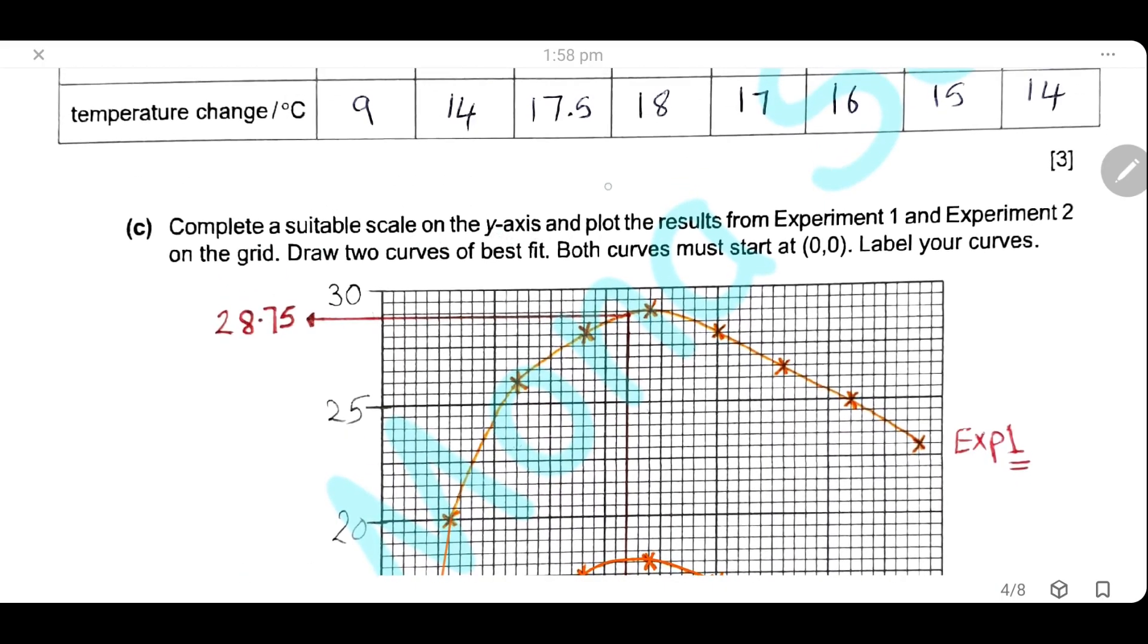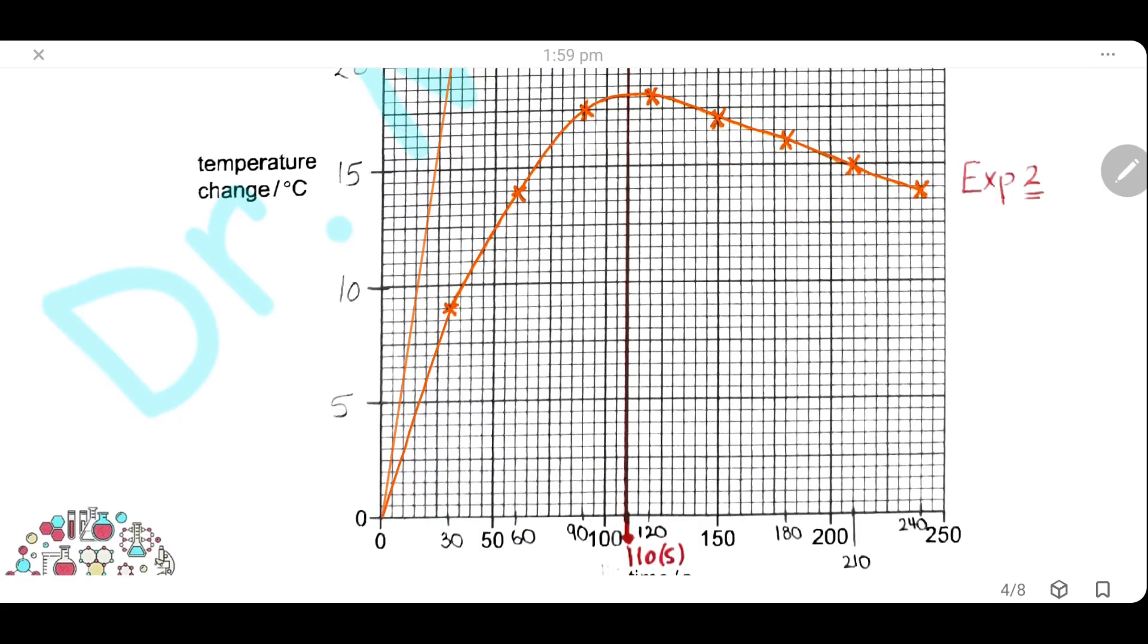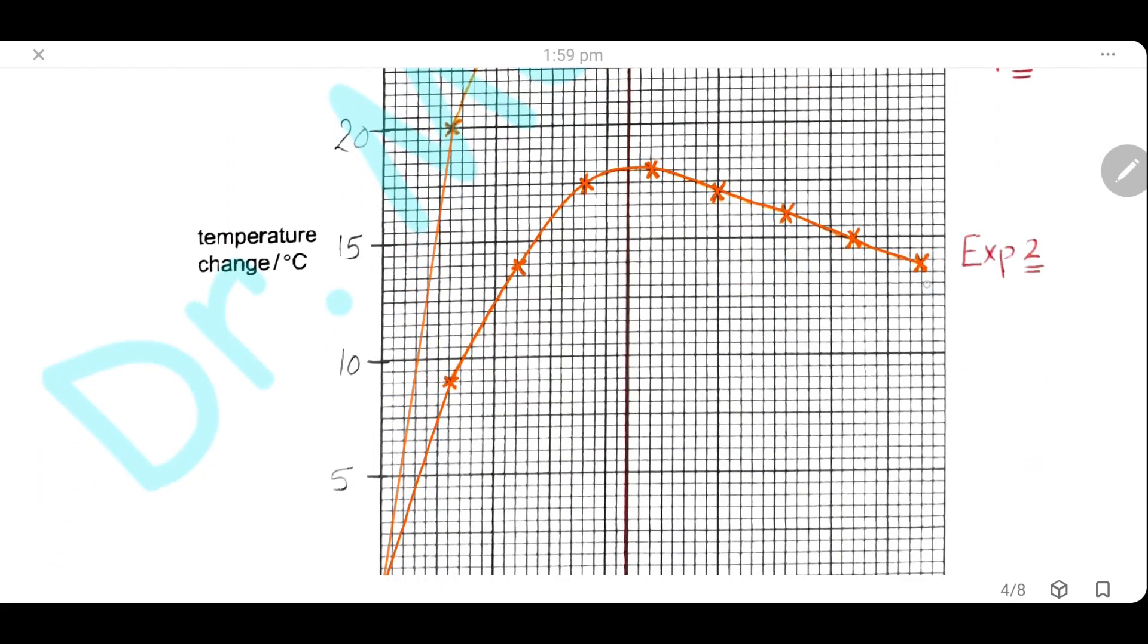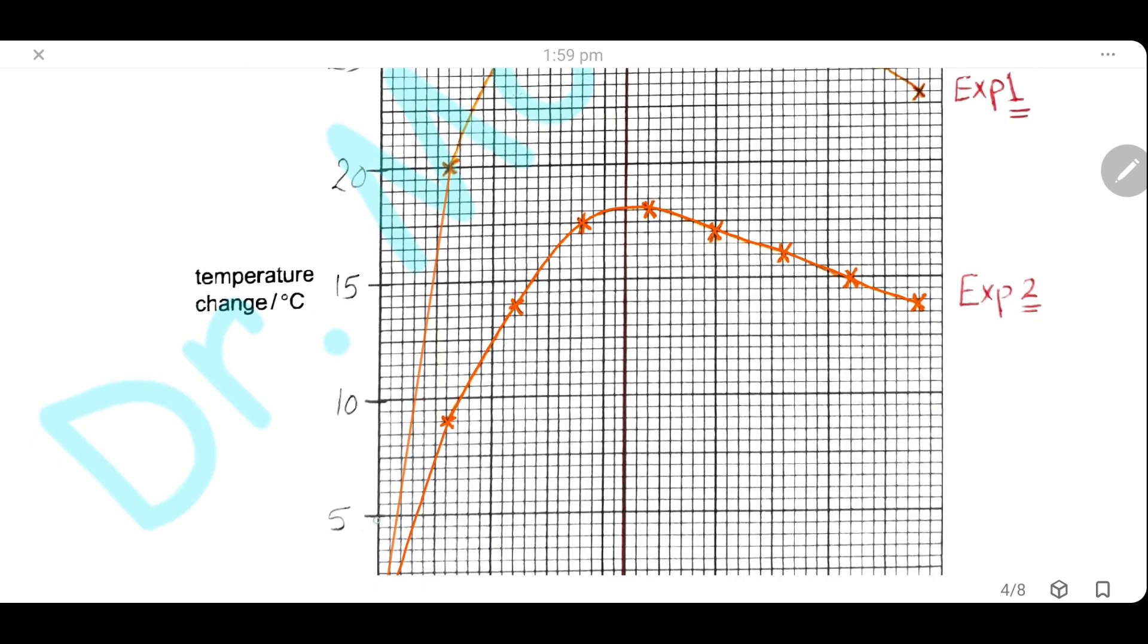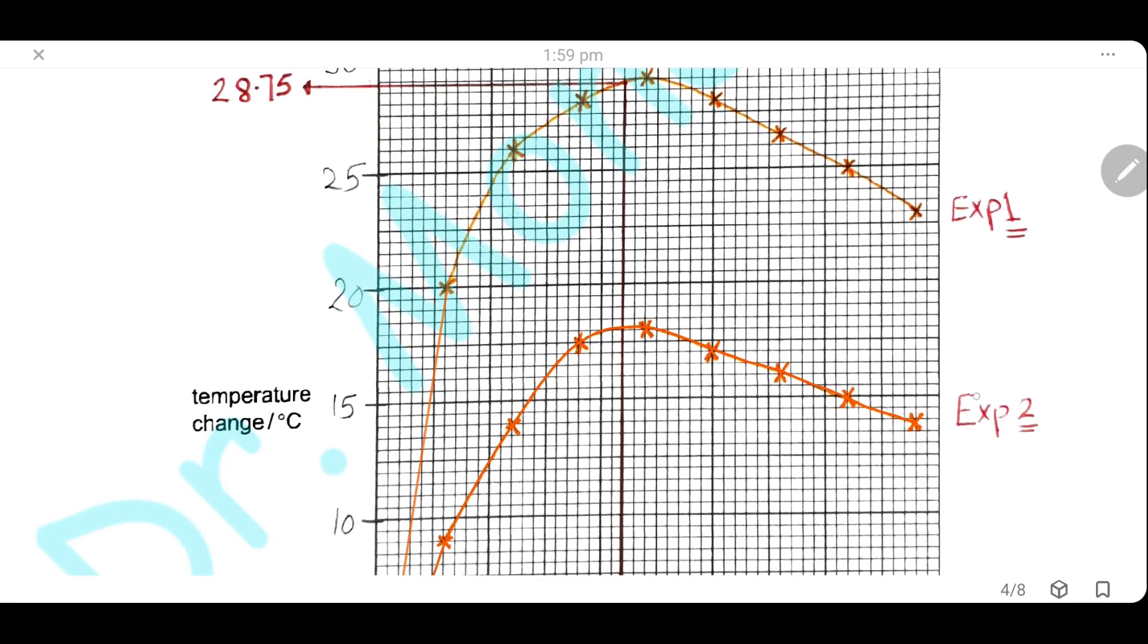Complete a suitable scale on the y-axis and plot the results for experiment 1 and experiment 2. Draw a curve of best fit and you should take care that both curves should start from the origin (0,0) and you should label your curves. We will plot the 8 points for experiment 1 correctly, but you should take care to start from the origin because at time zero, at 0 seconds, there was no change in temperature. Then, we will take the 8 readings for experiment 2 and plot another curve showing the results for experiment 2. I choose multiples of 5 as a scale for the y-axis and I label this one for experiment 1 and the second curve for experiment 2.